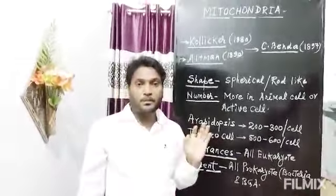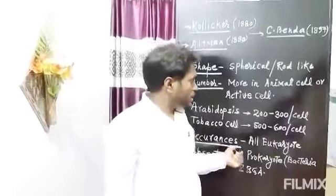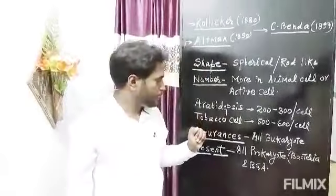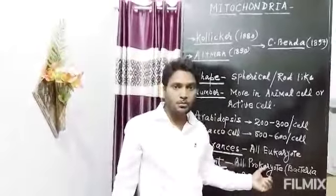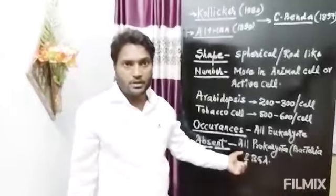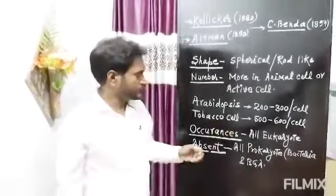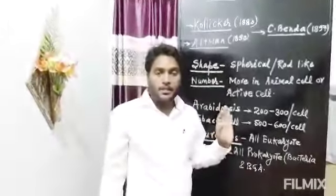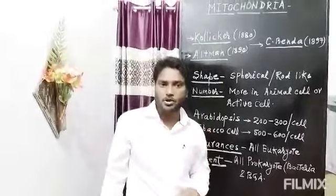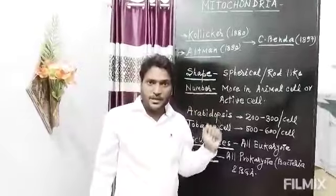Now we will see where mitochondria is found and where it is absent. Mitochondria is present in all eukaryotic cells, like plant cell and animal cell, while it is absent in prokaryotic cells, like bacteria and blue-green algae. We also know that blue-green algae are also known as cyanobacteria. Mitochondria is the site of aerobic respiration, where respiration occurs in the presence of oxygen. The cell where mitochondria is absent respires anaerobically.